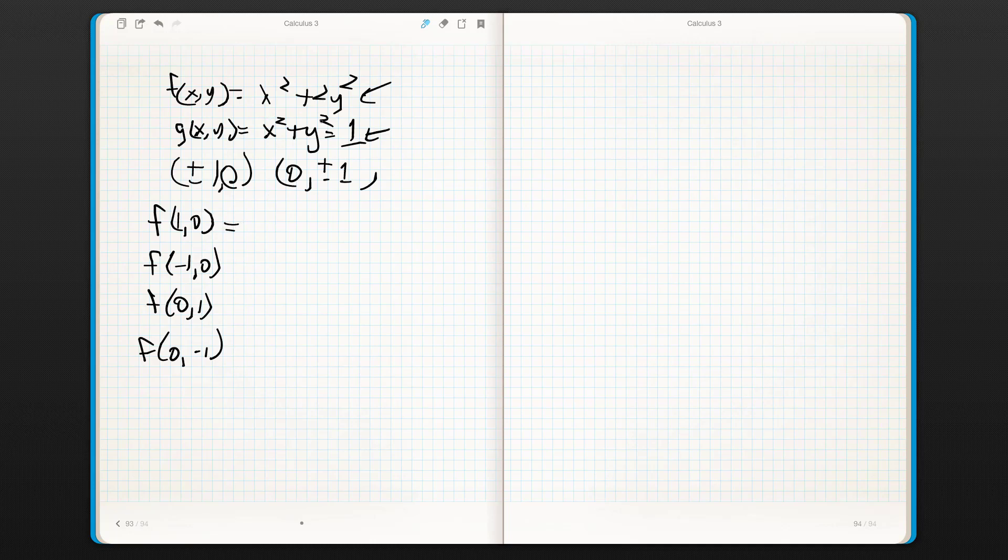f of 1, 0 is going to be 1. That's easy. f of negative 1, 0 is going to be 1. f of 0, 1 is going to be 2. f of 0, negative 1 is going to be 2. Now, that tells me that these are my abs mins, and these are my abs maxs, given the constraint.